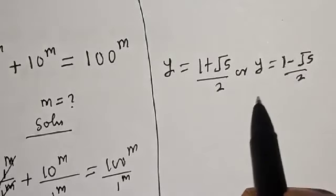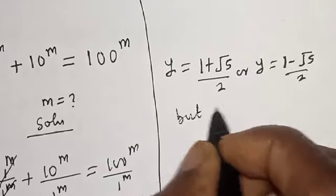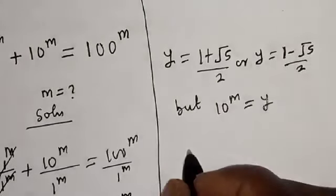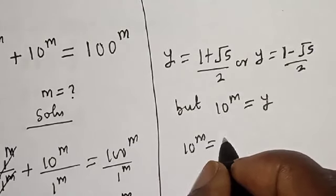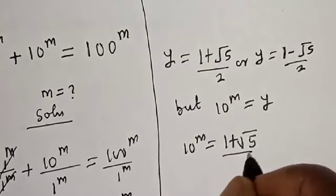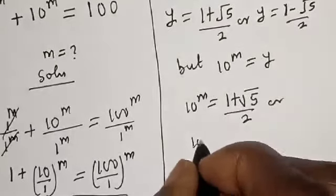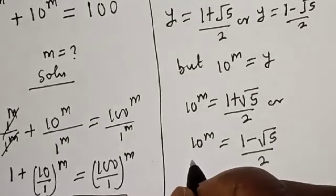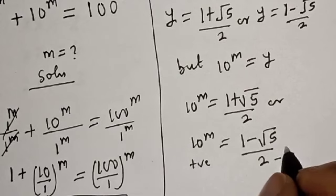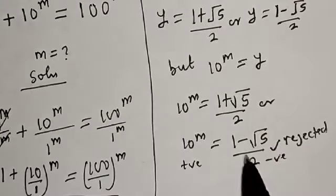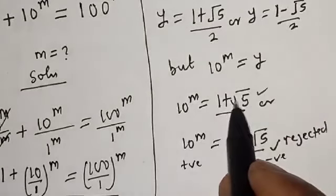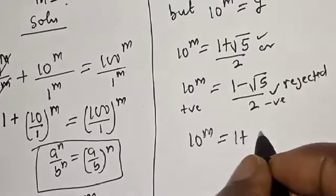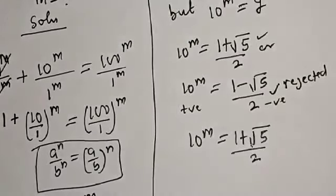But 10^m equals (1 plus √5) over 2, or 10^m equals (1 minus √5) over 2. However, (1 minus √5)/2 is negative, so this solution is rejected. The only valid solution is 10^m equals (1 plus √5) over 2. So we work with this as the only real solution.